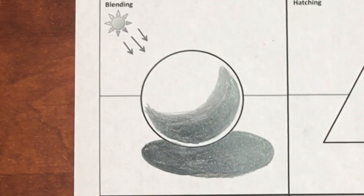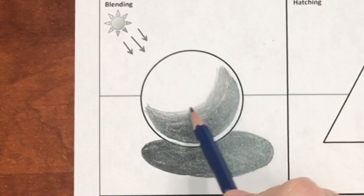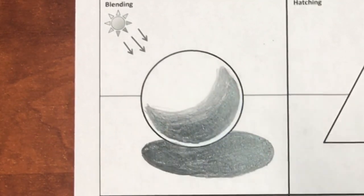As I apply value with the blending technique, I'm trying to use more of the side of the lead rather than the point in order to cover more ground and keep my transitions nice and smooth.